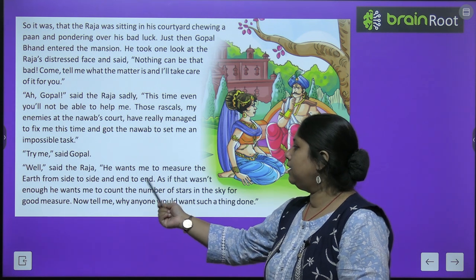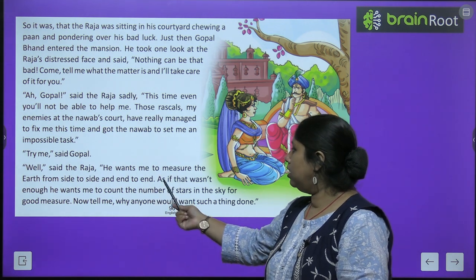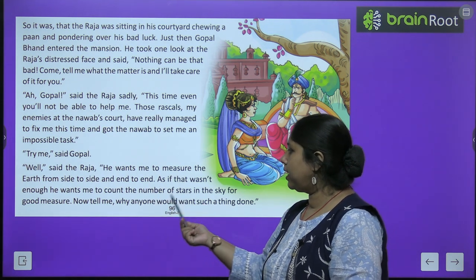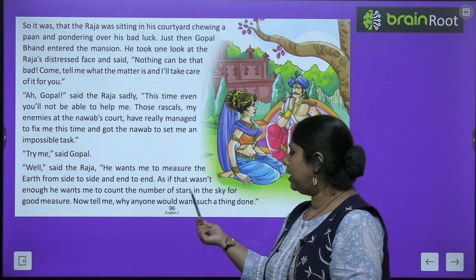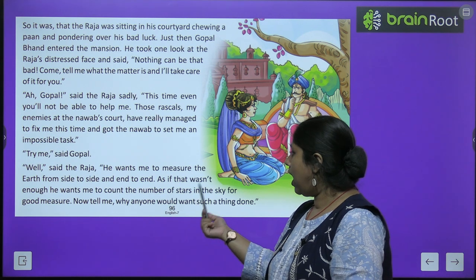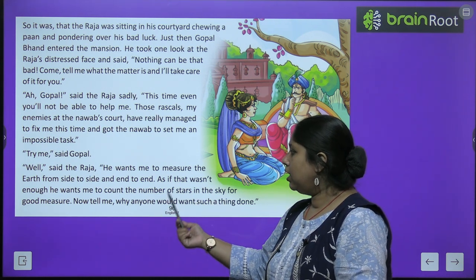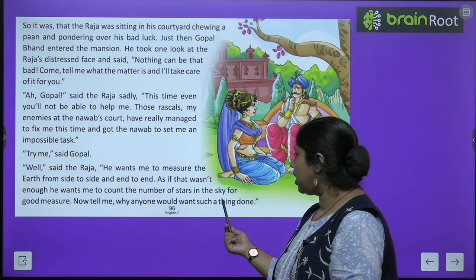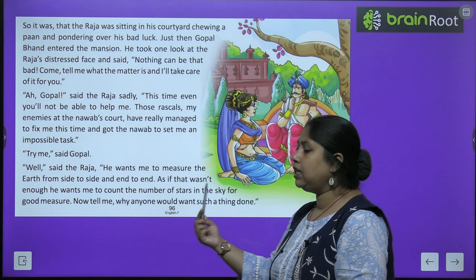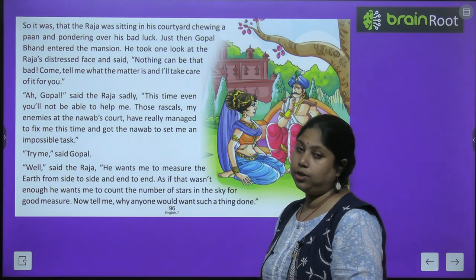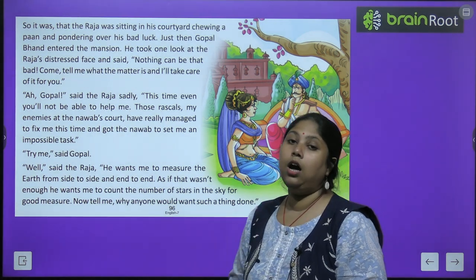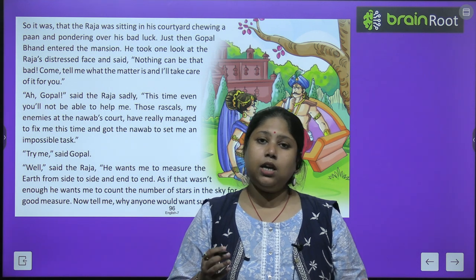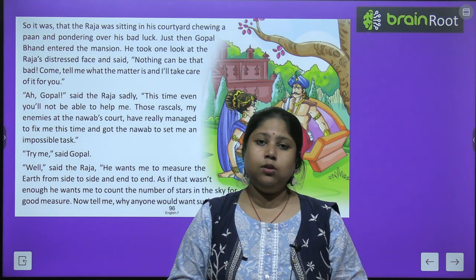The Raja said, 'He wants me to measure the earth from side to side and end to end. As if that wasn't enough, he also wants me to count the number of stars in the sky. Now what will you tell me, Gopal?'